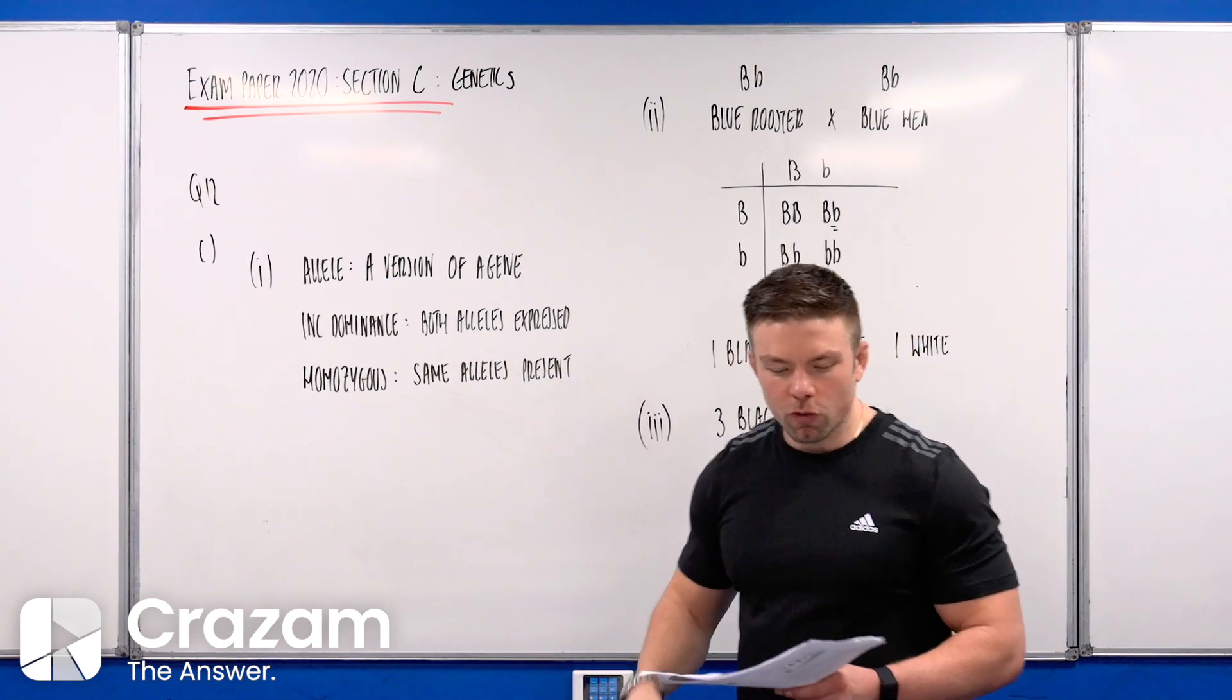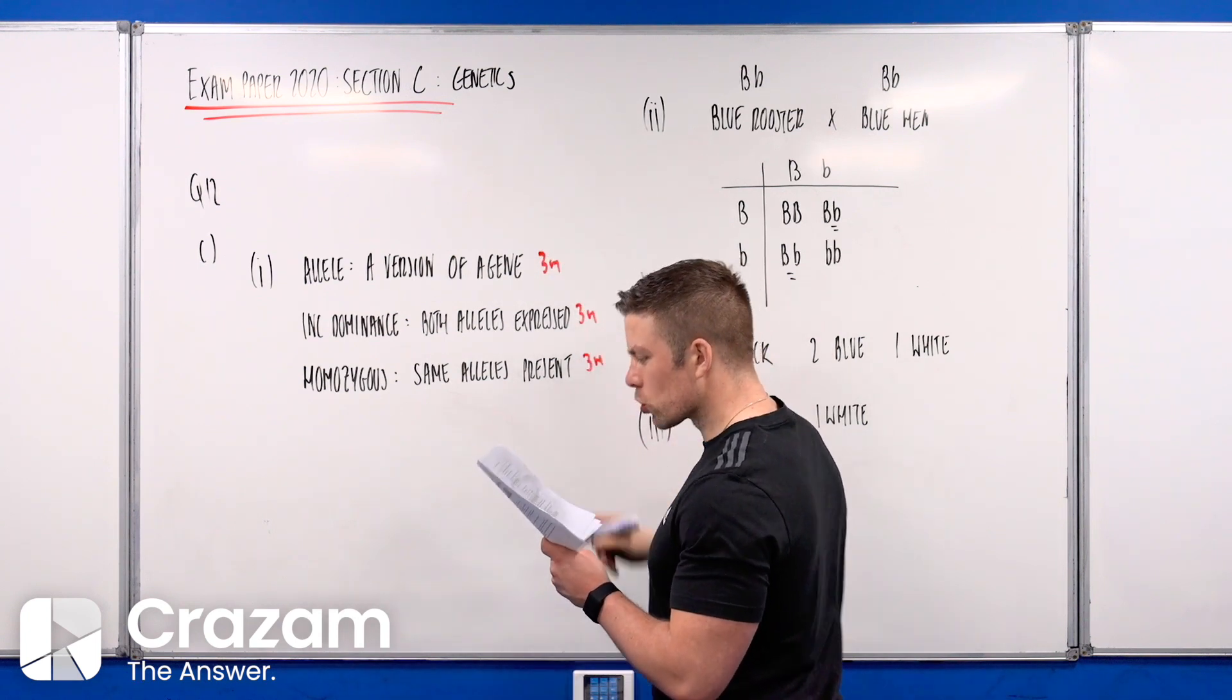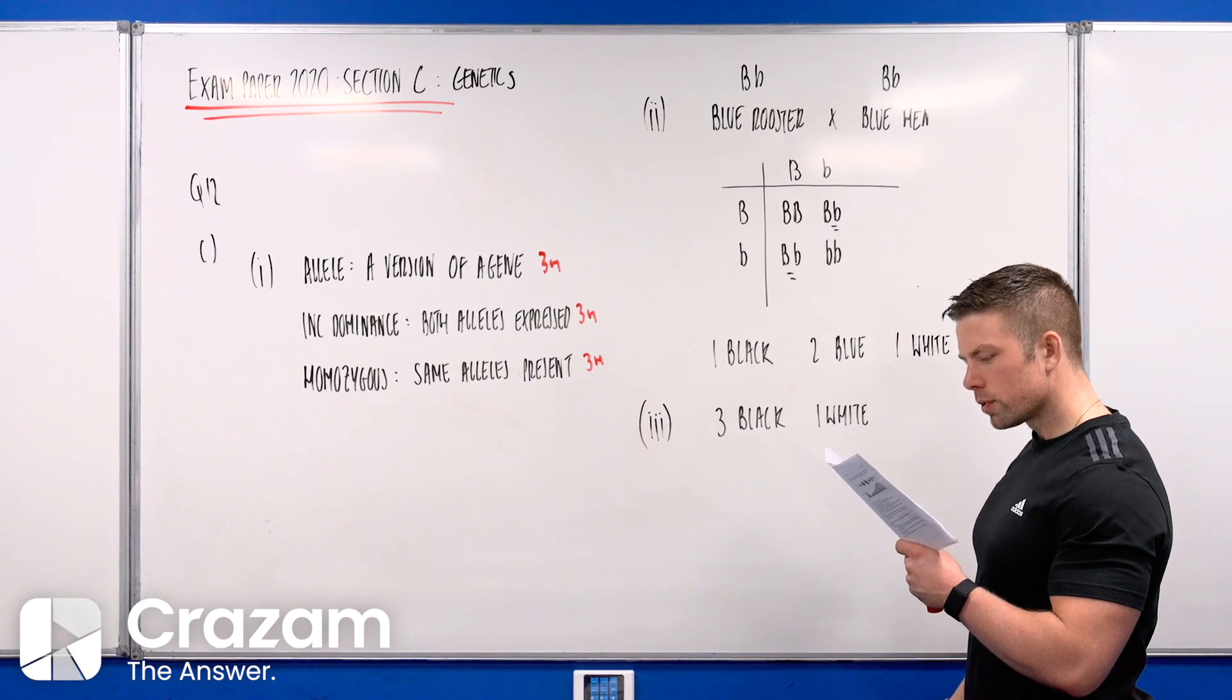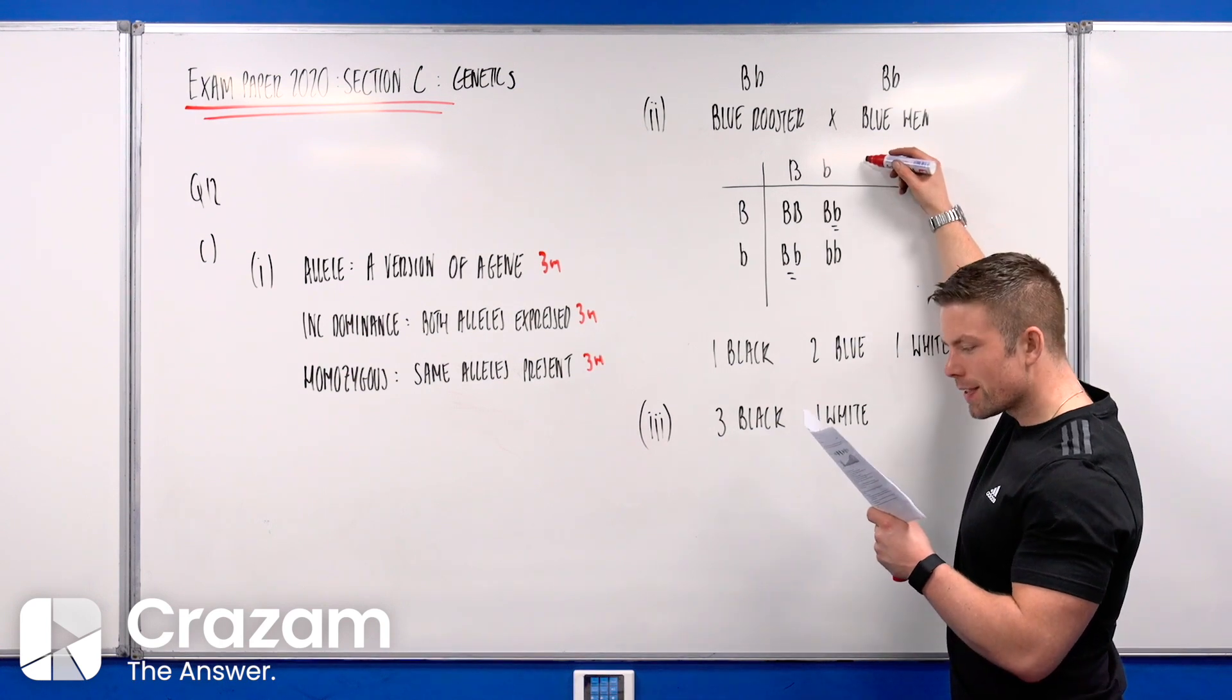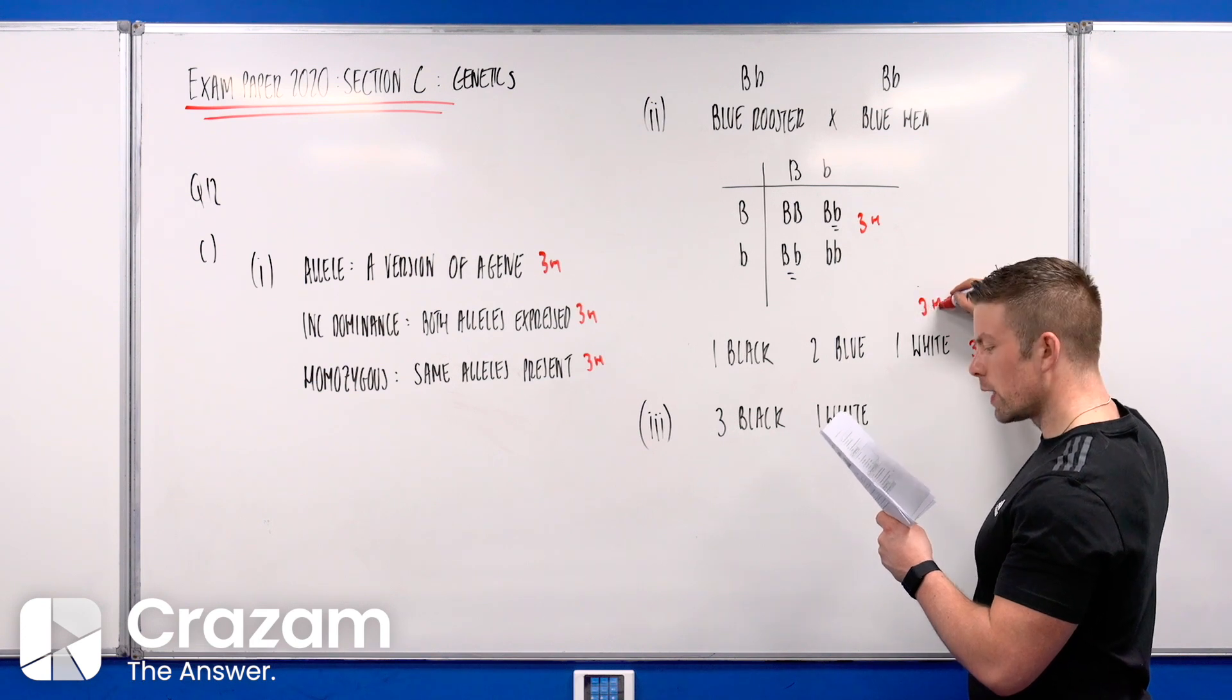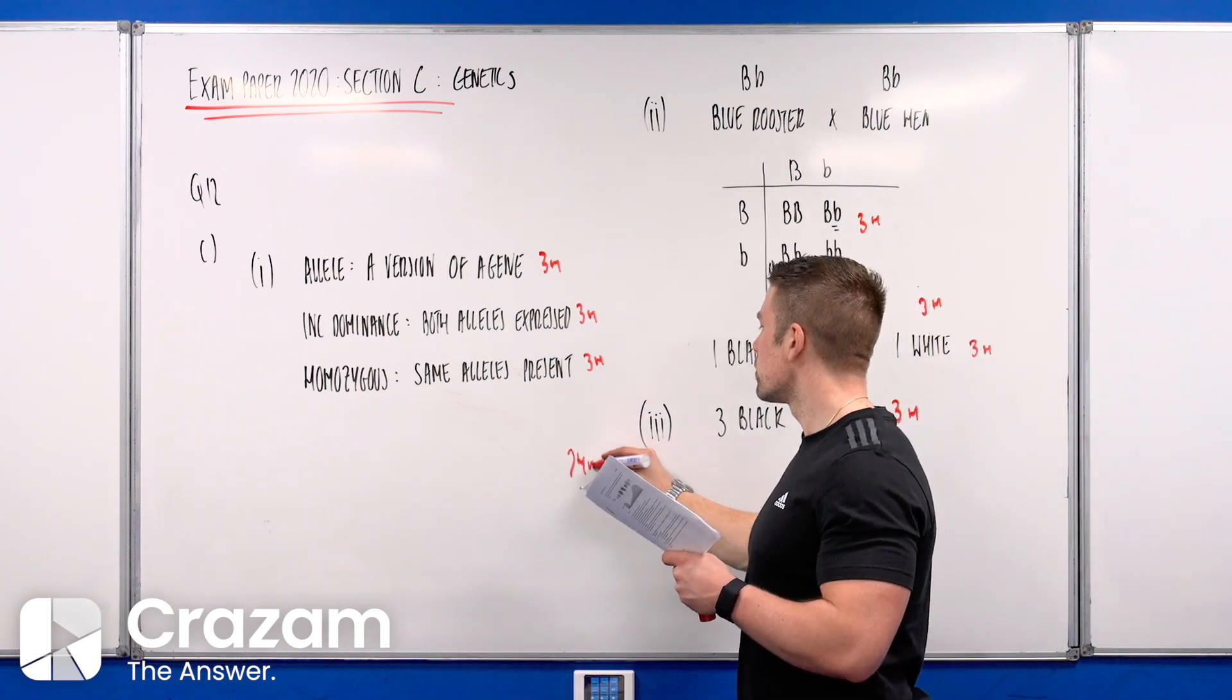That question turned out to be fairly straightforward once you get your teeth into it. 24 marks overall. The first part here, straightforward, three, three, and three brings us up to nine. Then the cross - if you mentioned the gametes or genotypes, that was three. The ratio is three, and what they look like was three. The ratio at the end was also three, bringing us to a total of 24 marks.